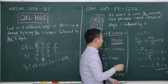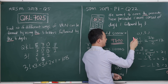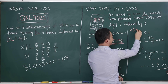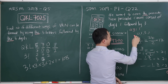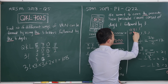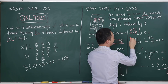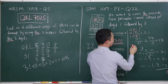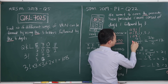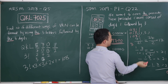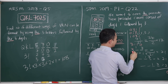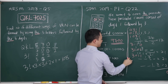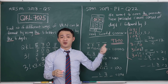Let me list out the six valid passcodes: 0311, 0131, 1031, 3110, 3101, and 3011. All of these satisfy the condition that digit 1 is not immediately followed by digit 3.